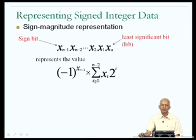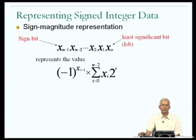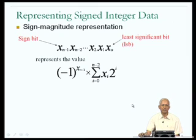This is what is known as the sign-magnitude representation for signed integer data. As it happens, the sign-magnitude representation is not used a lot in today's computers for the representation of signed integer data, for reasons we will see shortly. There are other representations more frequently used, and the only reason we are looking at this is that there may be some instances where we see the sign-magnitude representation used in other contexts.